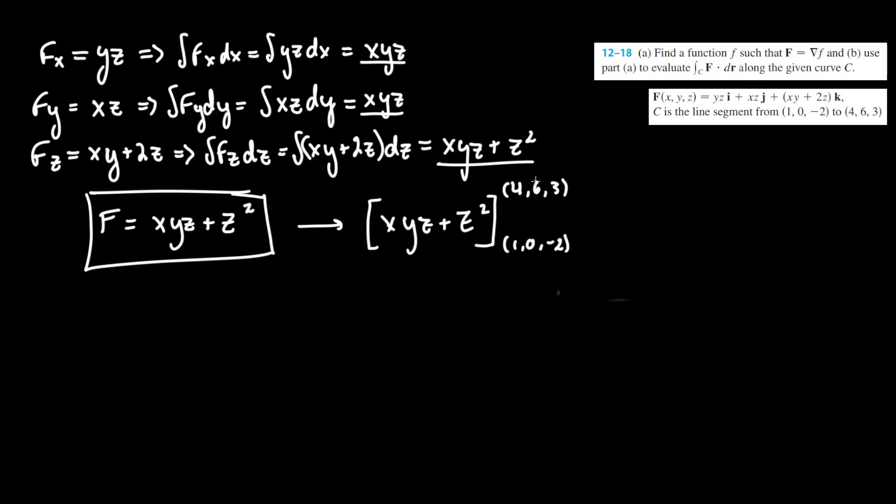All we have to do now is plug in these two values. On the top half we got (4, 6, 3), so plugging that in we get x=4, y=6, z=3 plus z again, 3 squared, and now we minus that by the lower component.